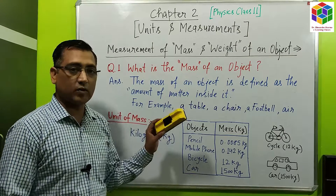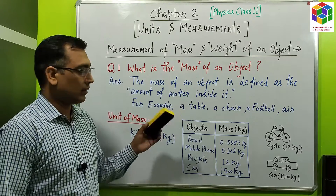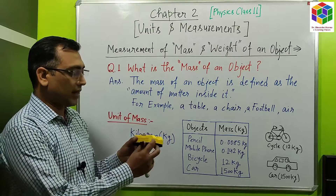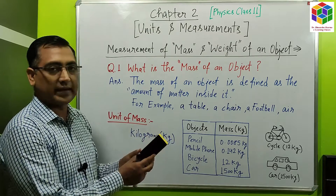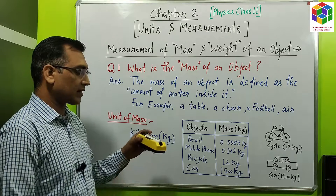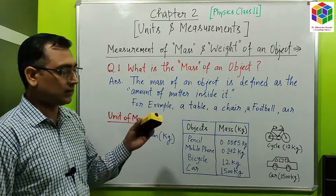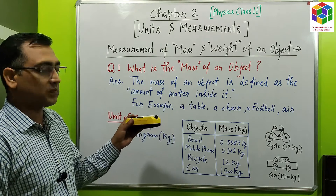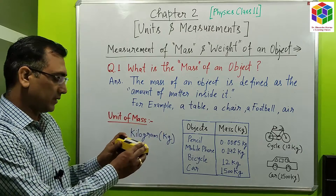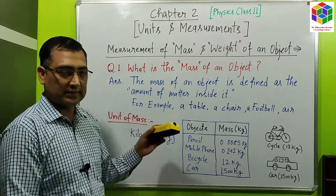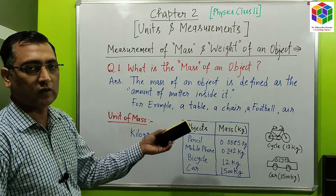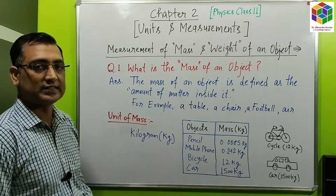Here I have an object which is a duster. Its mass consists of all the matter which is inside it. Like if I insert this marker into this duster, then its mass will increase because now the marker is a part of the duster. So this is the concept of mass of an object.